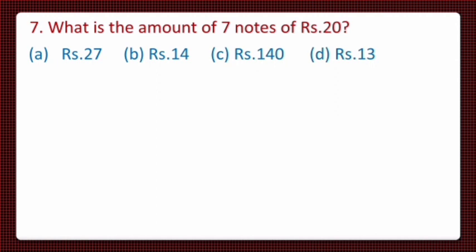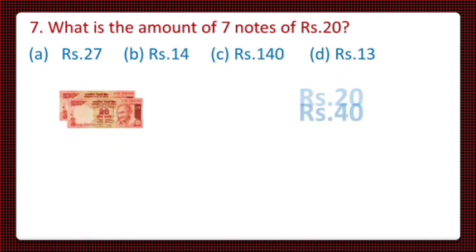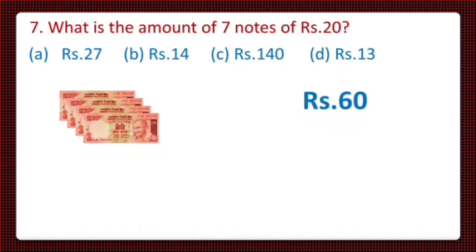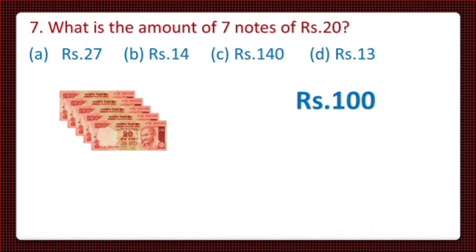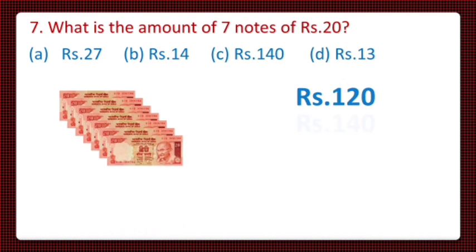So dear students, let's solve. We know the value of 1 twenty-rupee note is 20. The value of 2 twenty-rupee notes is Rs. 40. The value of 3 twenty-rupee notes is Rs. 60. The value of 4 twenty-rupee notes is Rs. 80. The value of 5 twenty-rupee notes is Rs. 100. The value of 6 twenty-rupee notes is Rs. 120. And the value of 7 twenty-rupee notes is Rs. 140. So from the given options, Rs. 140 is the correct answer, and it is given in option C. So let's take option C.